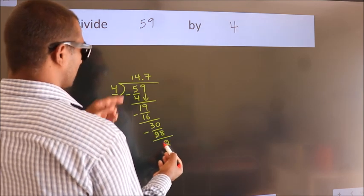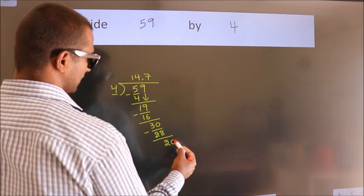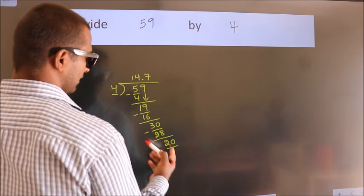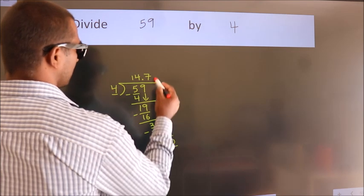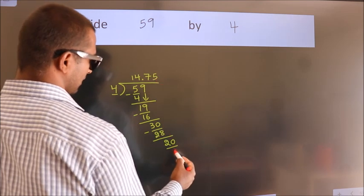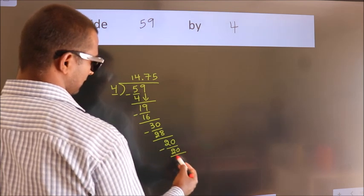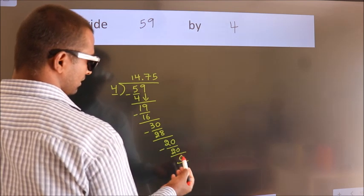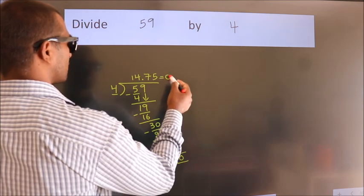After this, we already have the decimal. So directly take 0. So 20. When do we get 20? In 4 table. 4 fives, 20. Now we subtract. We get 0. We got remainder 0. So this is our quotient.